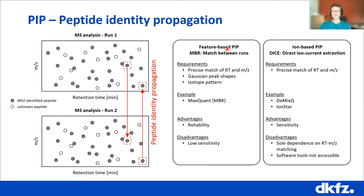The advantage of feature-based identity propagation is reliability — you have solid feature detection which is used to assign peptide identity. The advantage of ion-based detection, on the other hand, is its sensitivity. Because you don't have these requirements, it can sum up any intensity that falls within the mass and retention time region. Feature-based methods have a lower sensitivity as a disadvantage. What we wanted to do is actually combine the benefits of both — the reliability of feature-based approach with the sensitivity of DICE — and this is what I will show you in this presentation.